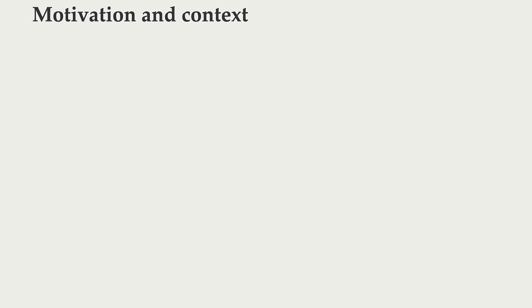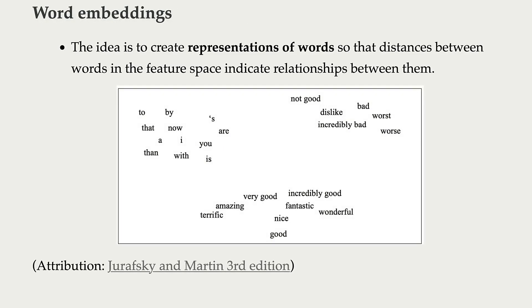In this lecture, we are going to talk about word embeddings and an algorithm called Word2Vec, which is typically used to create word embeddings. The idea of word embeddings is to create representations of words — real valued feature vectors representing words — so that distances between these feature vectors in the feature space indicate relationships between them.